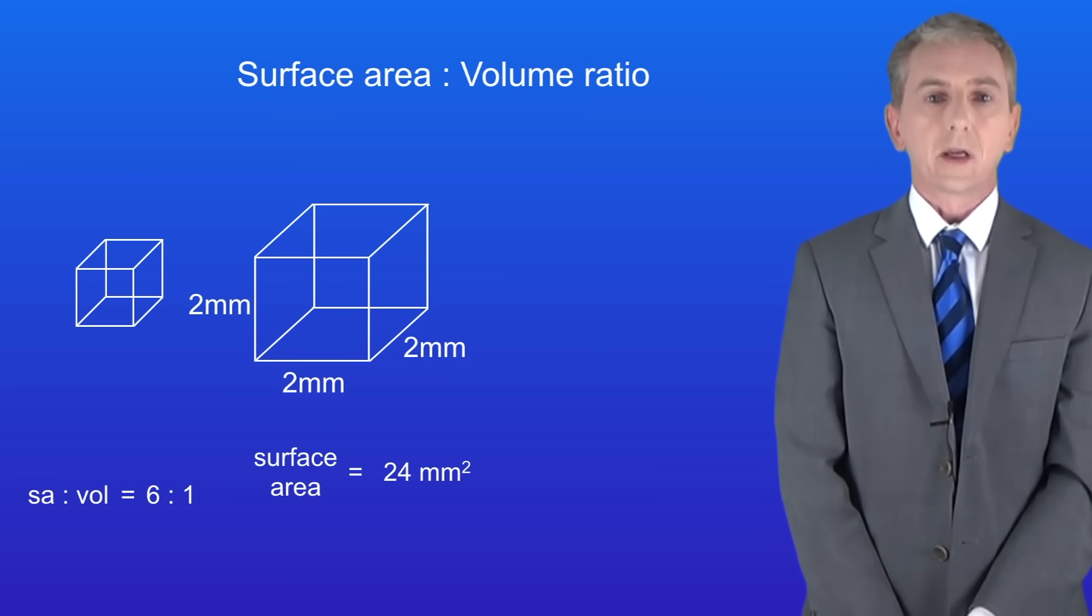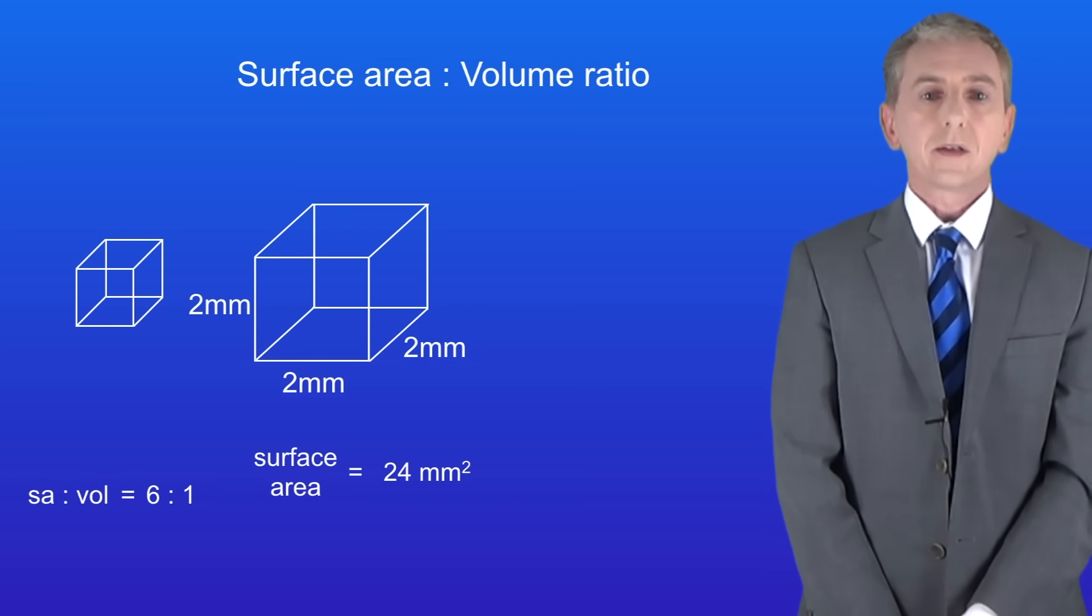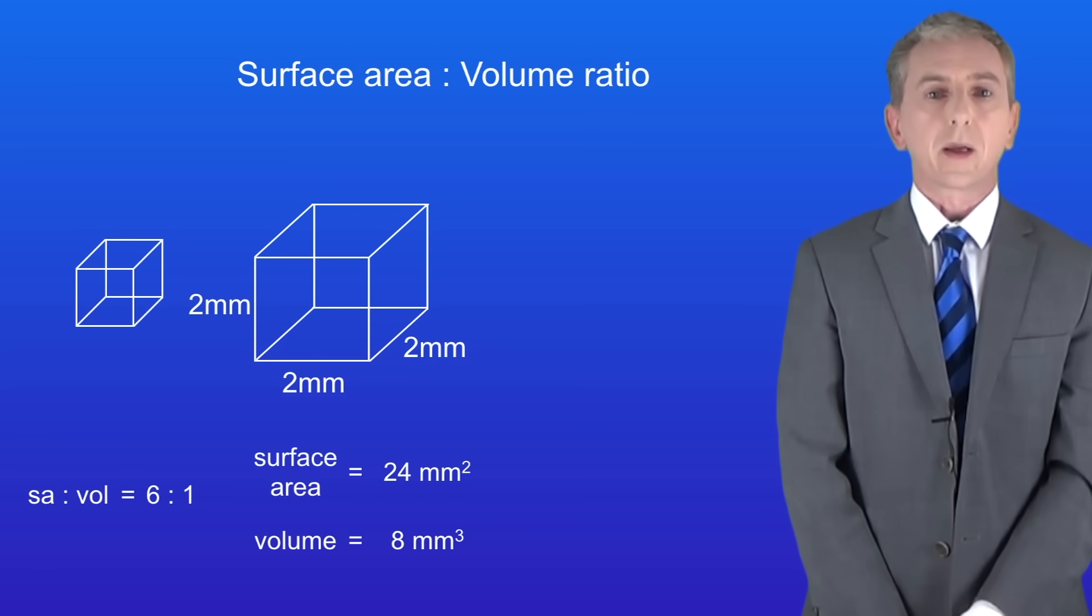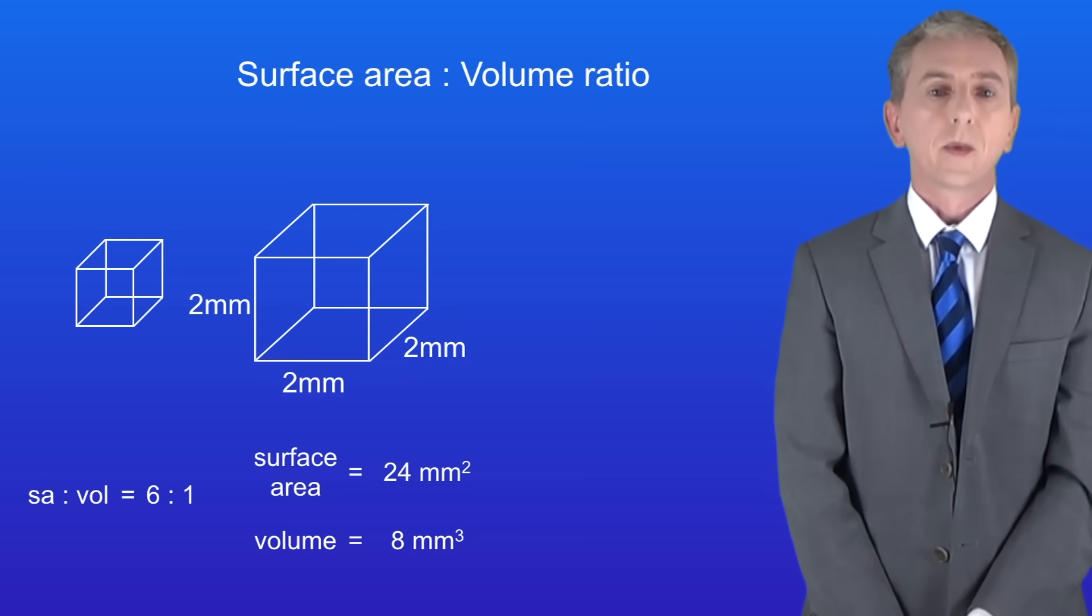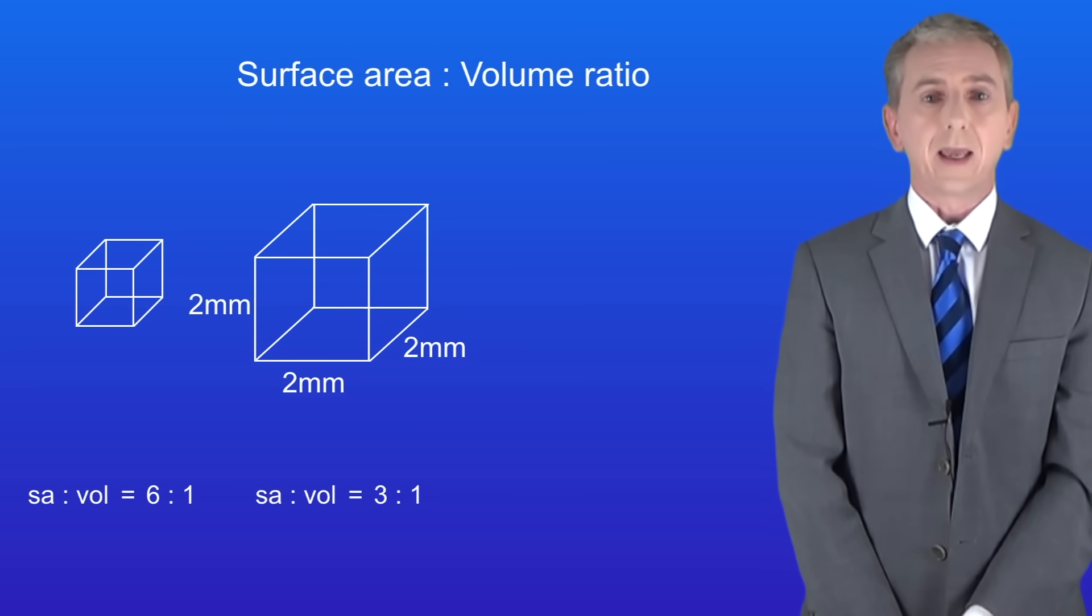Okay, the surface area is two multiplied by two multiplied by six which gives us a value of 24 square millimetres. The volume is two multiplied by two multiplied by two giving us a value of eight cubic millimetres. The surface area to volume ratio is 24 divided by 8 giving us a ratio of three to one.